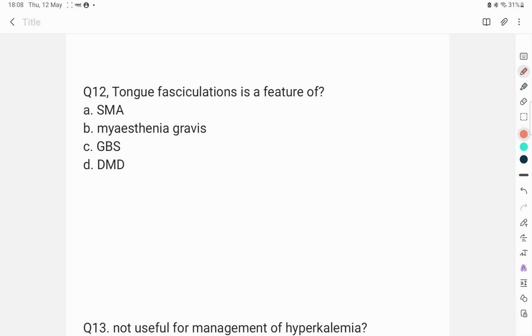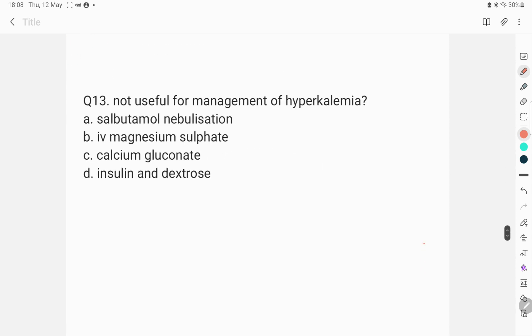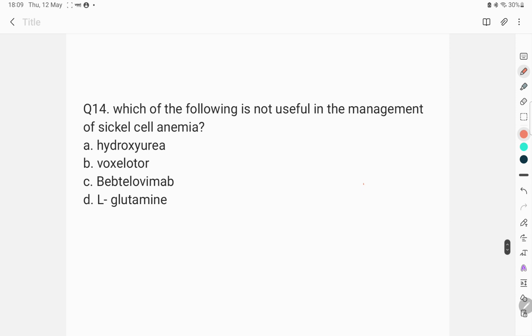The next question is, tongue fasciculation is a feature of denervation that is seen in spinal muscular atrophy. The next question is, what is not useful for the management of hyperkalemia? Salbutamol nebulization, IV magnesium sulfate, calcium gluconate, insulin and dextrose. The answer to this question is IV magnesium sulfate. First step in management of hyperkalemia is giving calcium gluconate to stabilize the membrane. The second step is to move the extracellular potassium into the cell. This is achieved by salbutamol nebulization, insulin and dextrose or by sodium bicarb. Magnesium sulfate is given in exacerbation of asthma and not given in the management of hyperkalemia.